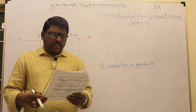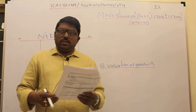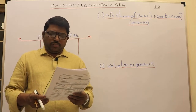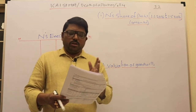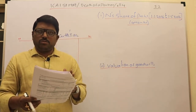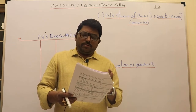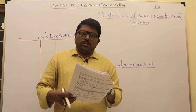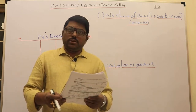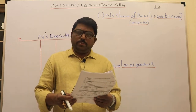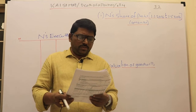The profits of the last 3 completed years are: 2013 — 42,000; 2014 — 39,000; 2015 — 45,000. N died on May 1st, 2016. Since books are closed on December 31st 2015, N was alive for January, February, March, and April — a period of 4 months — and profit for that period must be given based on the average profits of the last 3 completed years.